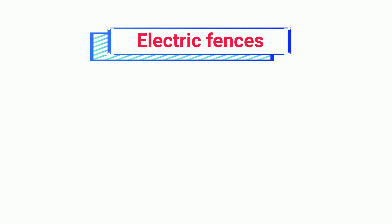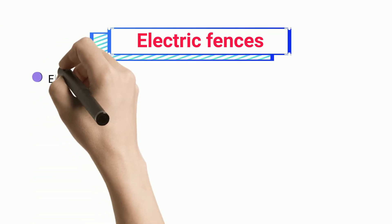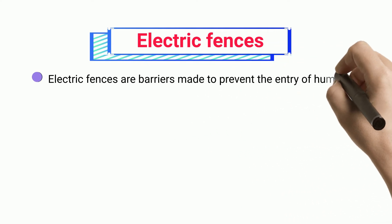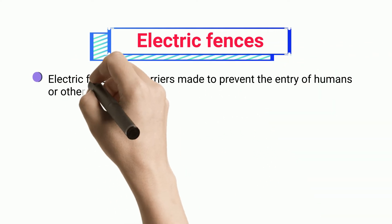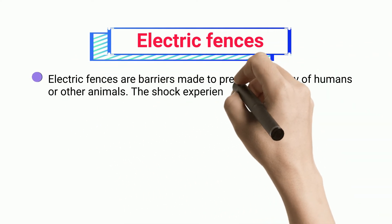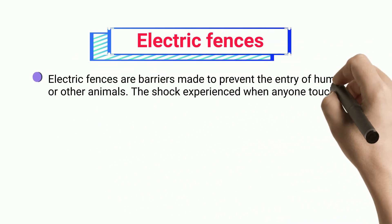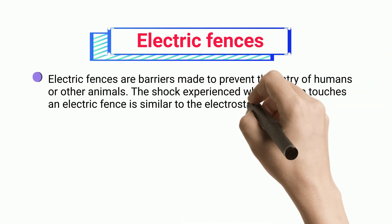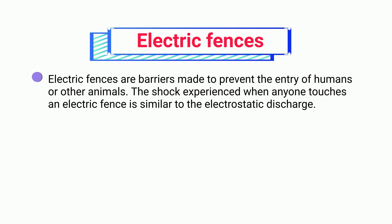Electric fences are barriers made to prevent the entry of humans or other animals. The shock experienced when anyone touches an electric fence is similar to electrostatic discharge.